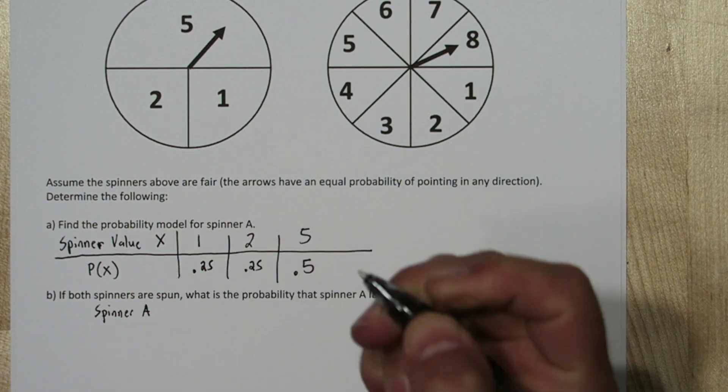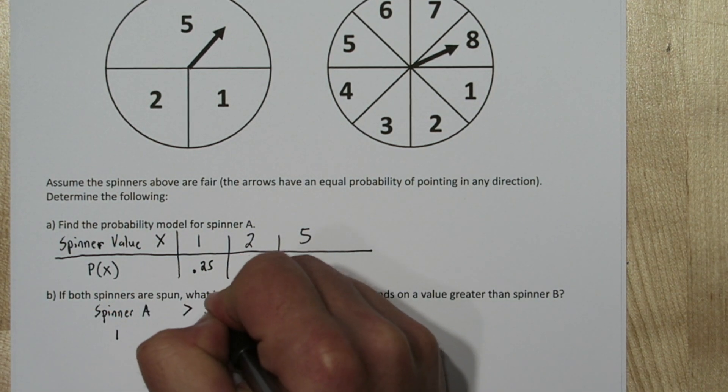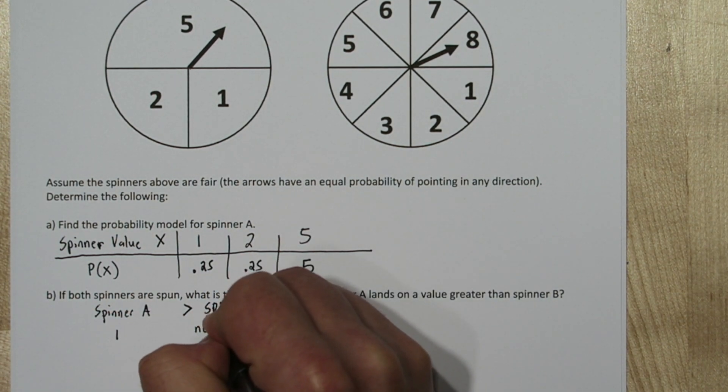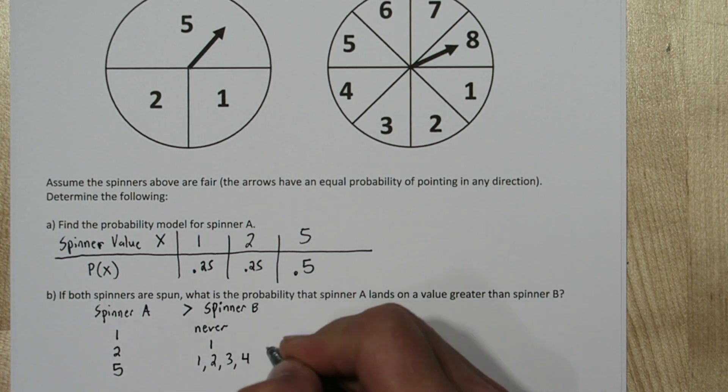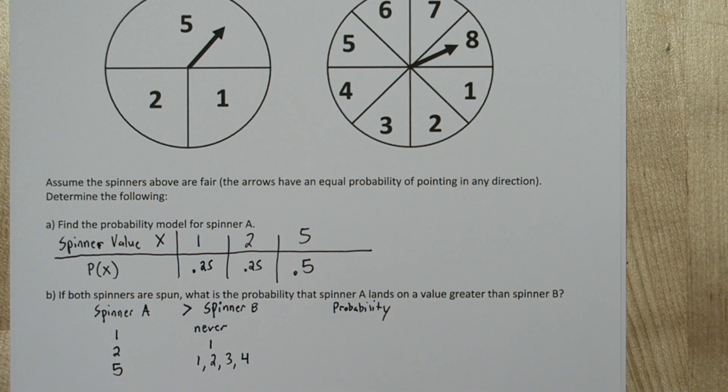Now there's only 3 values spinner A can land on: 1, 2, and 5. If spinner A lands on 1, its value can't be greater than spinner B's value, so there's 0 probability of that happening.